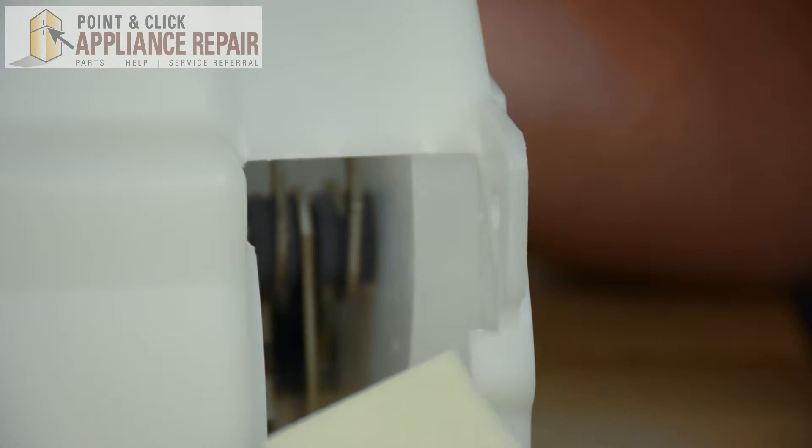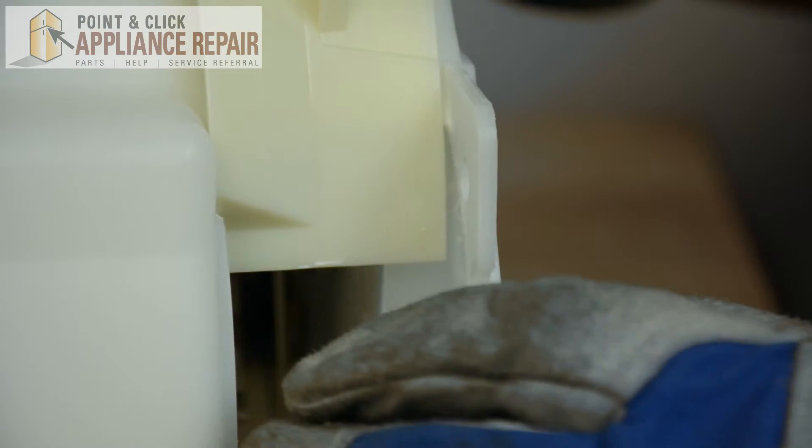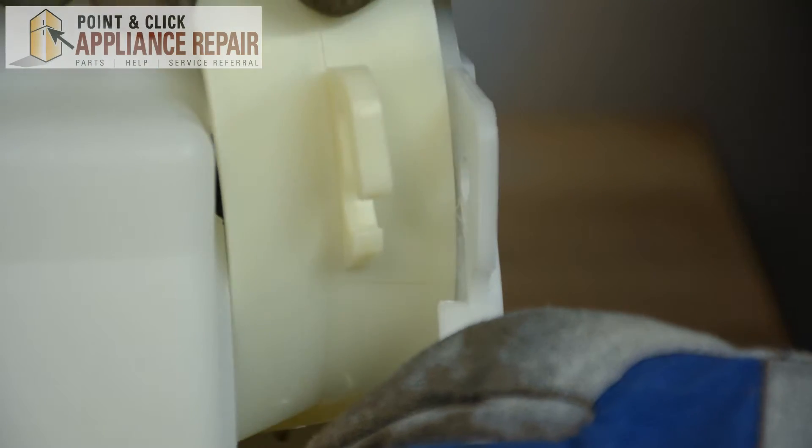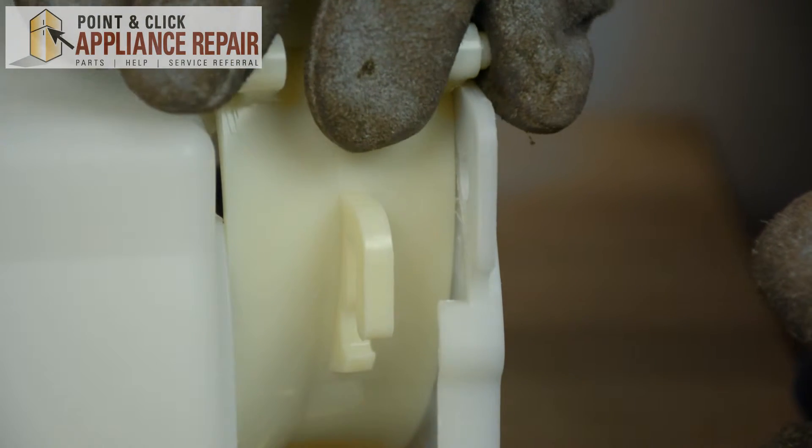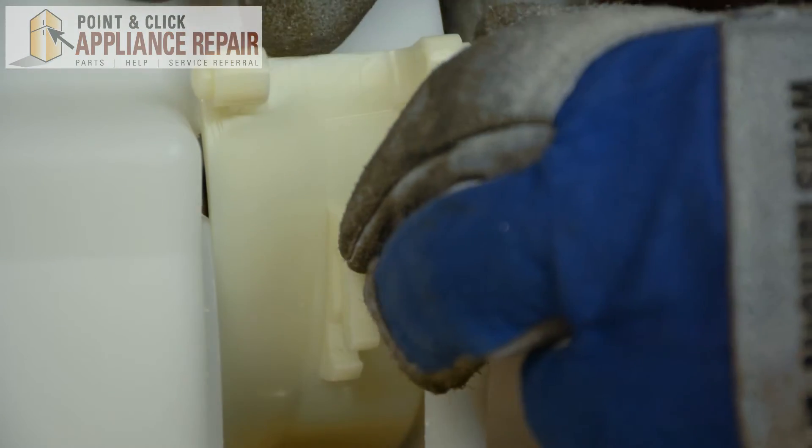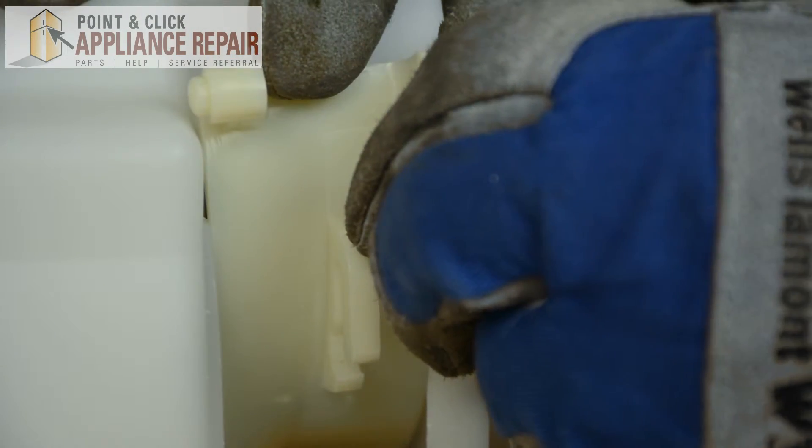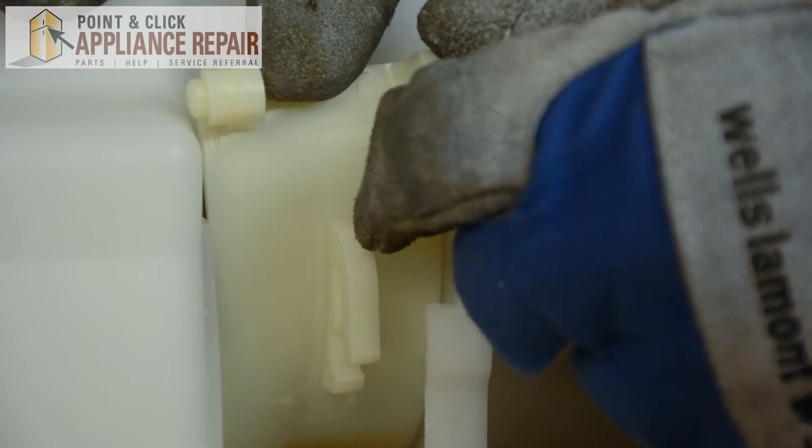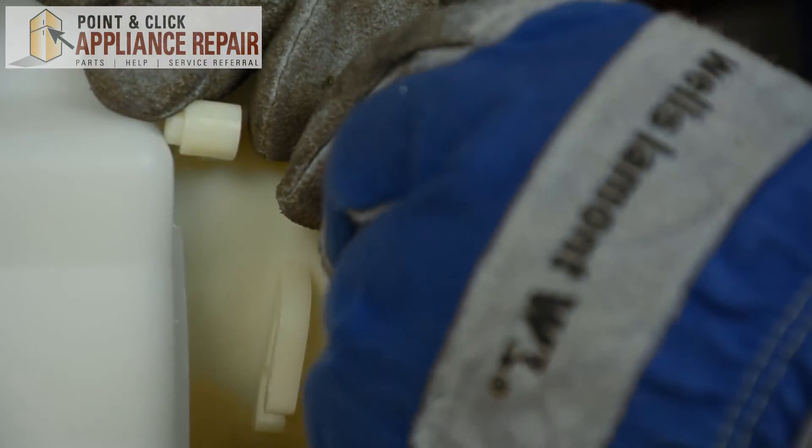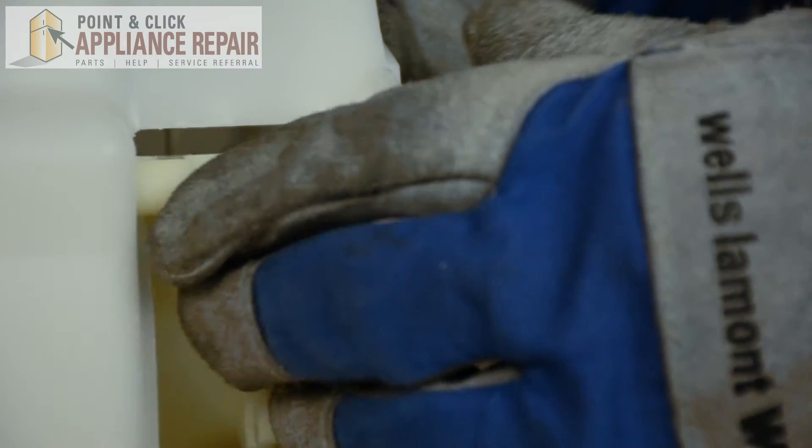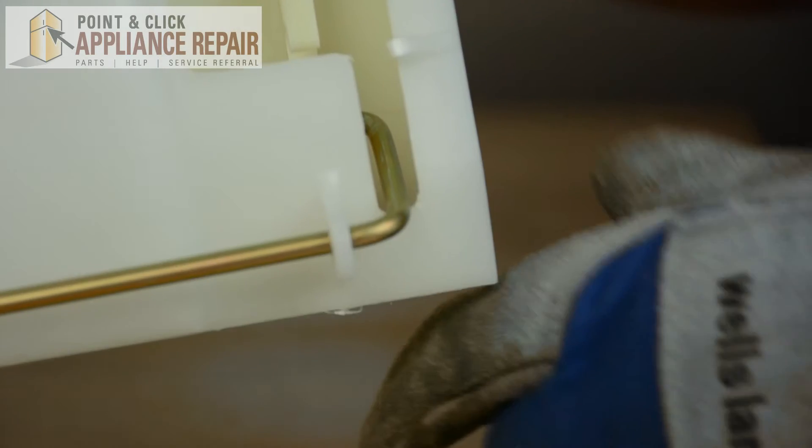Once you have your new ice deflector, we're going to slide it into place from the top down. It's going to be going in front of the control arm. And then, be careful of your fingers, we're going to press these pins down into place. Like so. And then we can turn the ice bin on its side.